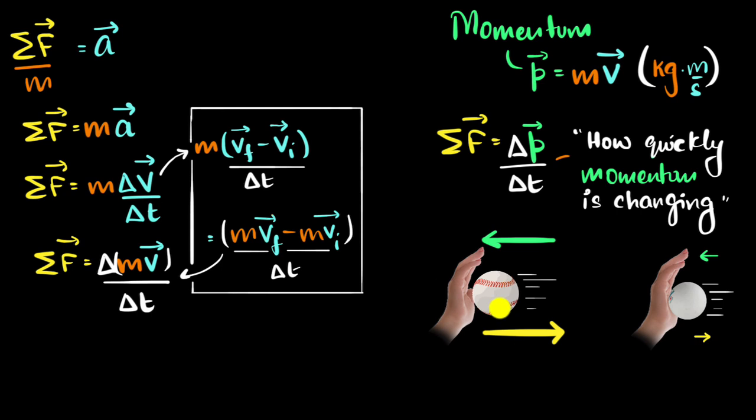Finally, why is it while we're catching something heavy like this, we instinctively pull our hand back? How does that help us? How does that reduce the amount of pain that we get? When we pull our hand back, we are increasing the time over which that ball is coming to a stop, right? In other words, we are increasing the time over which that momentum is changing.